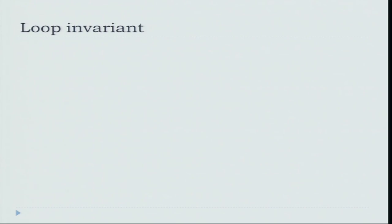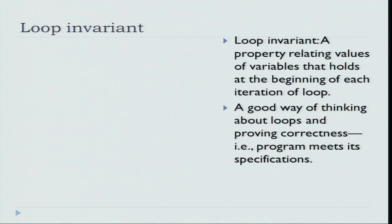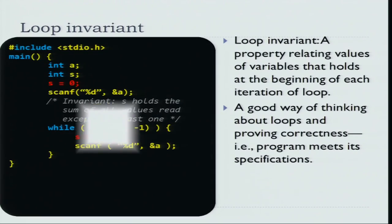Here is a concept that I will introduce to help you argue about the correctness of a loop. There is a notion known as a loop invariant. A loop invariant is a property relating values of the variables that holds at the beginning of each loop iteration. Loop invariants are a good way of thinking about the correctness of the loops that you have written. In our program, what will be the loop invariant?